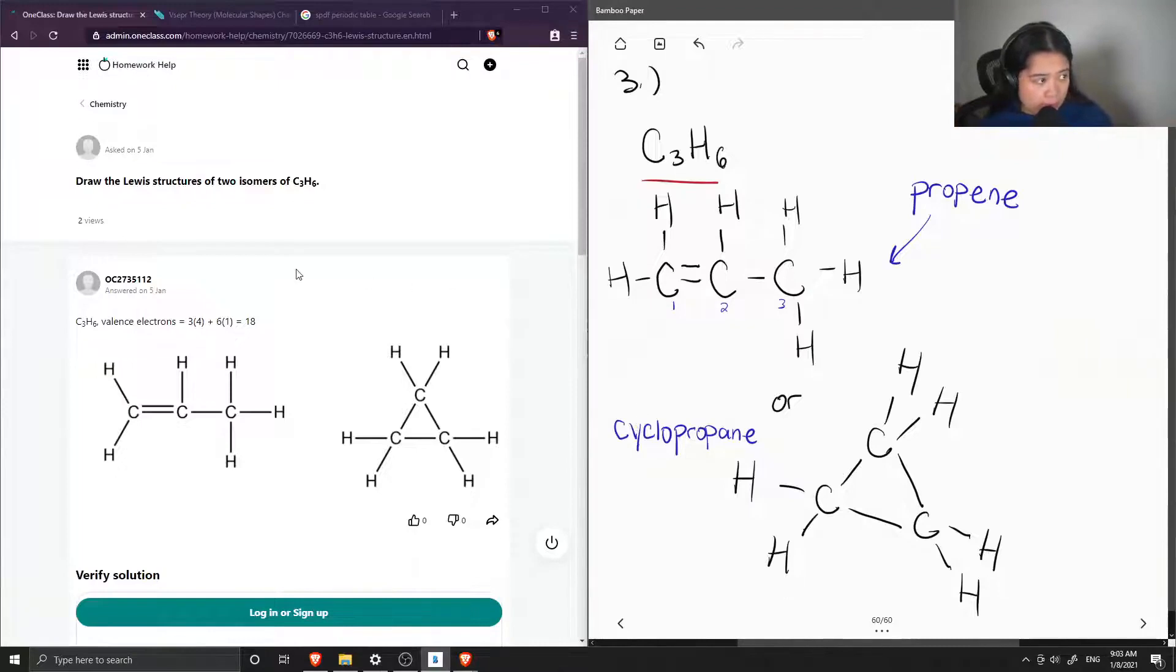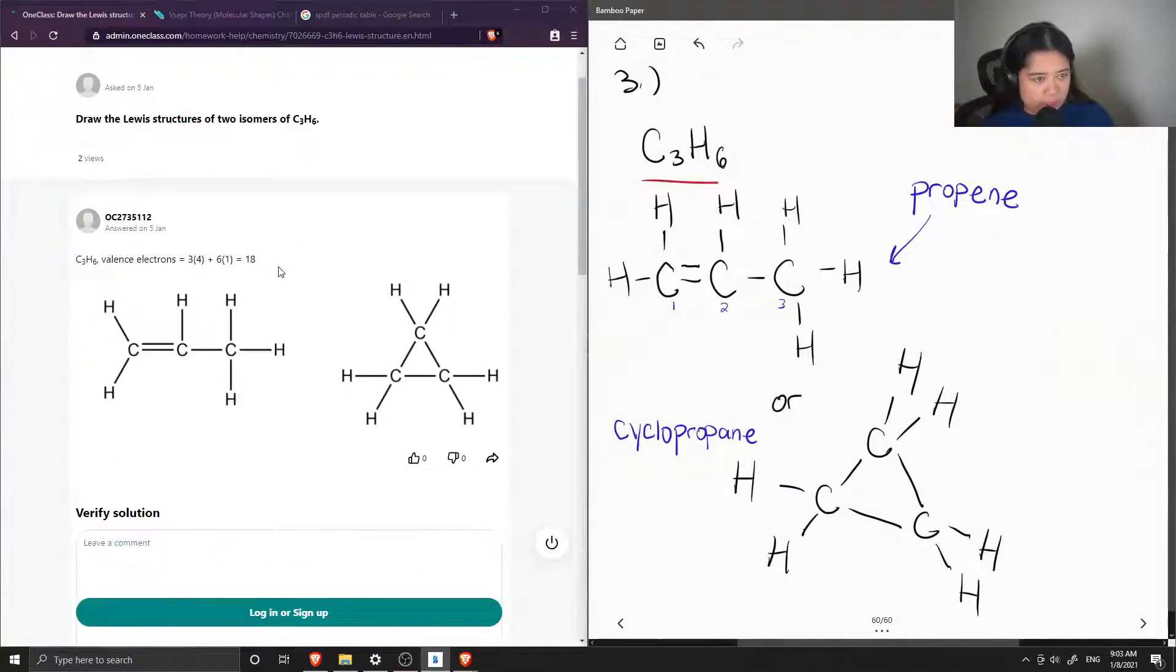These are the two isomers of C3H6. Looking at the junior tutor's answer, they got the same thing and counted the valence electrons as well.